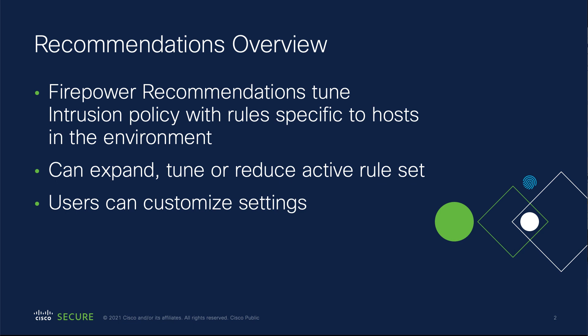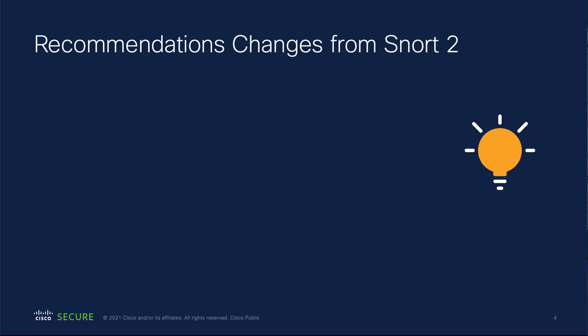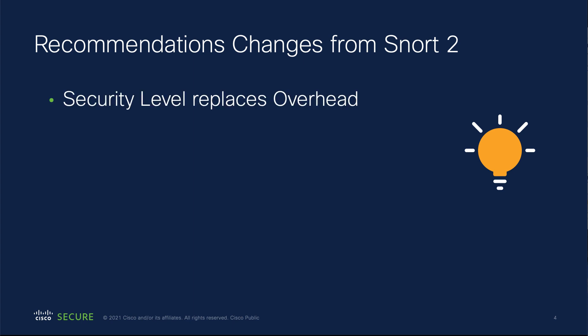What are some changes from Snort 2 to Snort 3? In Snort 2 we had this concept of overhead — rules have an overhead assigned to them — but that goes away in Snort 3. Now we're using what we call security level, which really maps over to a policy. Security level really means policy, and this is something that has been existing already in version 7 of the product starting in the Snort 3 version.